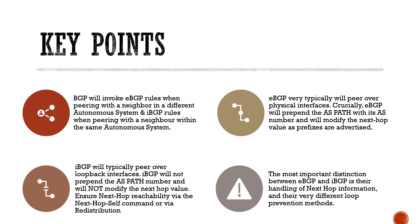eBGP will very typically peer over physical interfaces. You actually can peer over loopbacks in eBGP, but you'll need to set up static routes pointing towards the opposing AS, or make an agreement to run an IGP between the two so you can reach that loopback. Be aware that eBGP has a default TTL value of one, and if you're going to peer on the loopback, that's going to take two hops — so you need to make a modification using the eBGP multi-hop command.